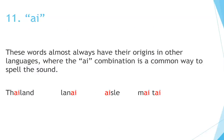Number 11: A-I. These words almost always have their origins in other languages, where the A-I combination is a common way to spell the sound. For example: Thailand, lanai, isle, Mai Tai.